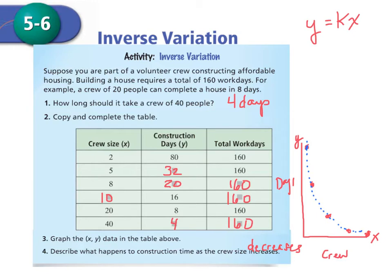So what's the relationship between x and y here? You'll notice that x times y gives me another number. And we have just written the equation for inverse variation. If you take x and times it by y, you're going to get k. And in this case, it's the total number of workdays, which is 160.